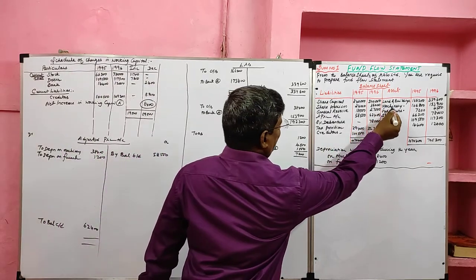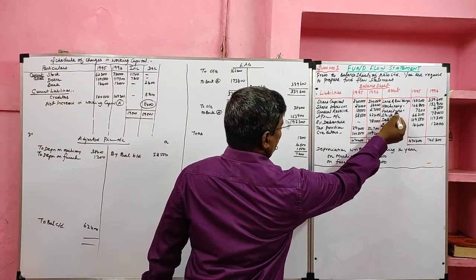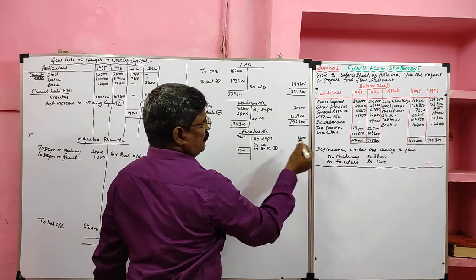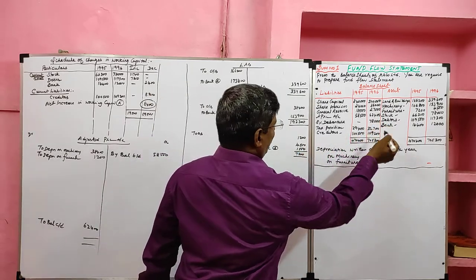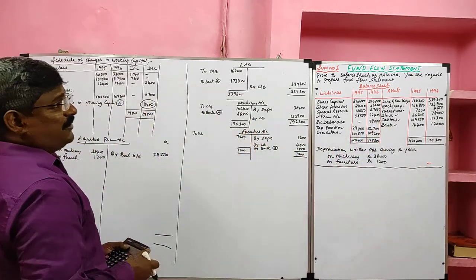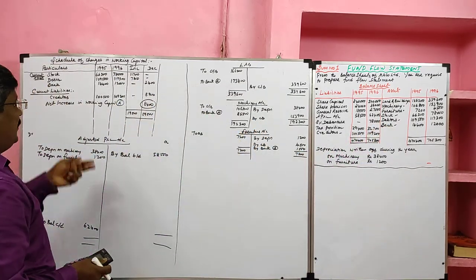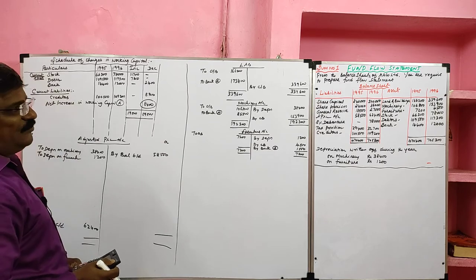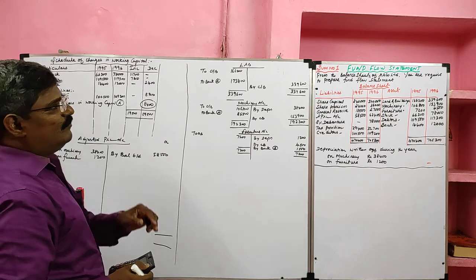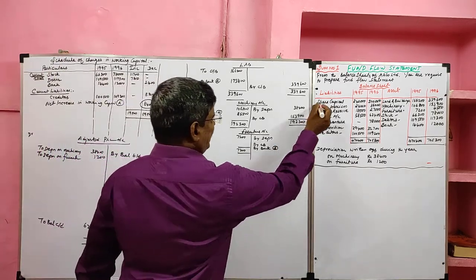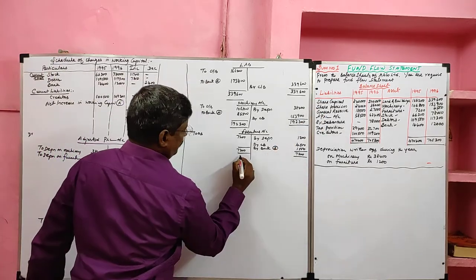Asset side ledger accounts — land and building, plant and machinery, furniture — are now prepared. Stock, debtors, and bank are current assets included in the schedule of changes in working capital. Now we move to the liability side.